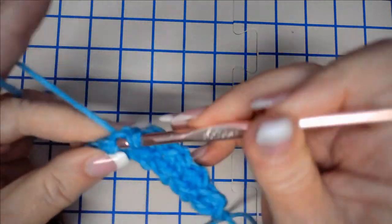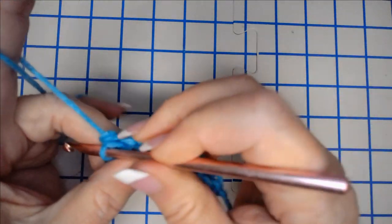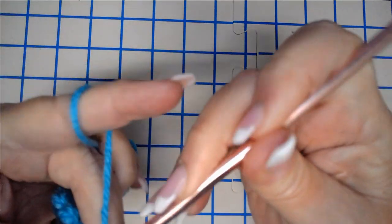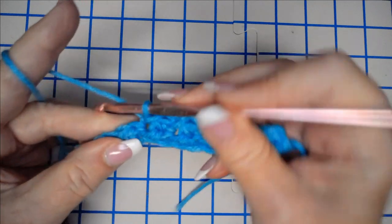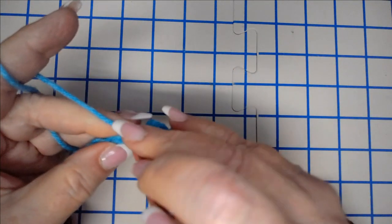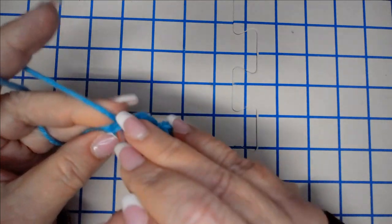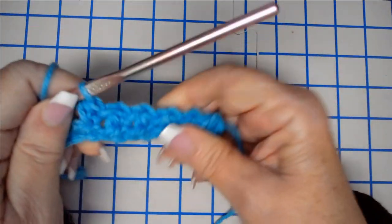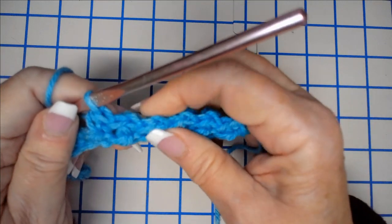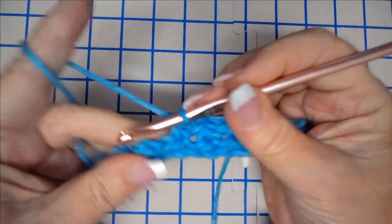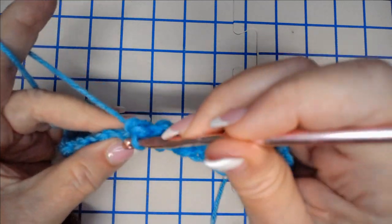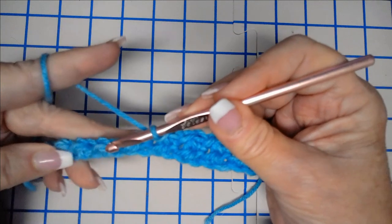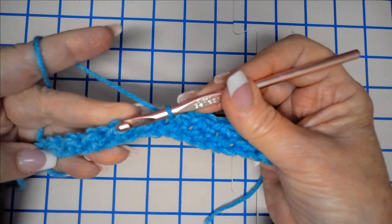We just continue working all the way down with the slip stitch falling in the half double crochet from the row before, and our half double crochet going into that slip stitch from the row before. And that is why I told you that you need to make sure that your slip stitches are not real tight because you're going to have to work back into them. All right, and I'll meet you down here at the end of the row in just a minute.